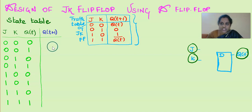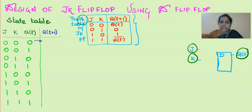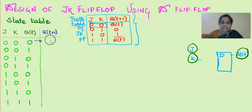We want to implement the functionality of JK. For the first row, let us consider J and K values are 0, 0 and the present state is 0. According to the JK truth table, if J, K equal to 0, 0, the output we require is the same state. The previous state is 0, so it will come as the next state also.